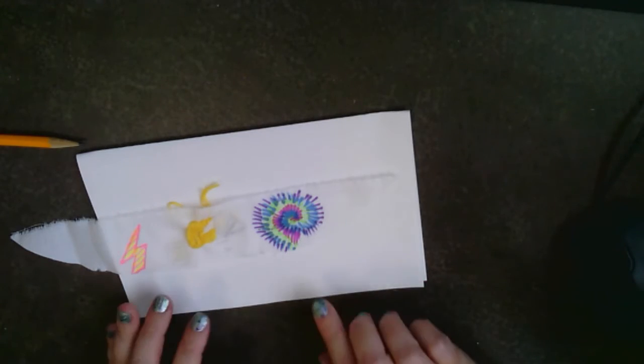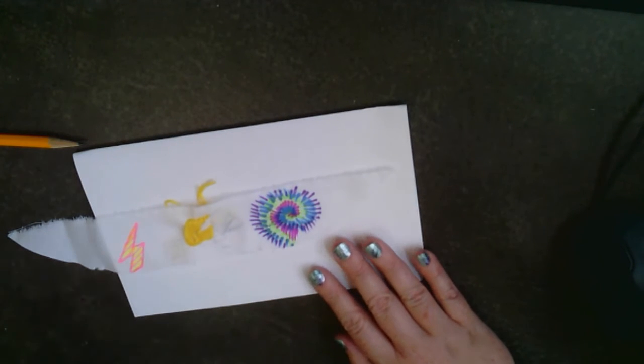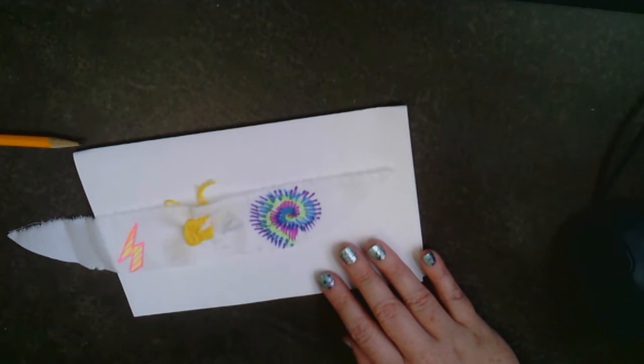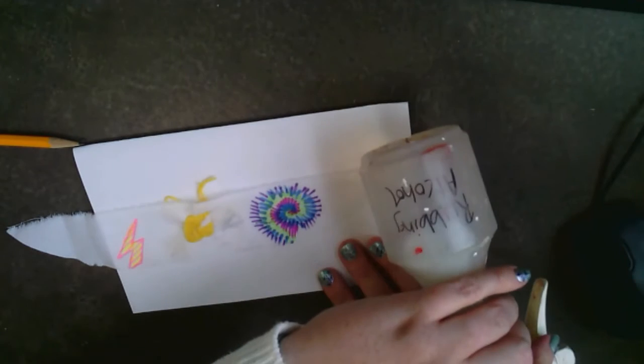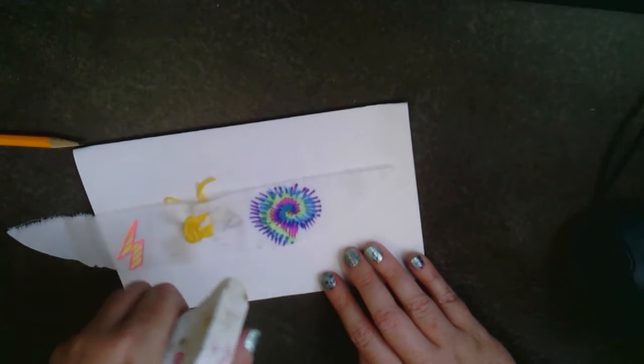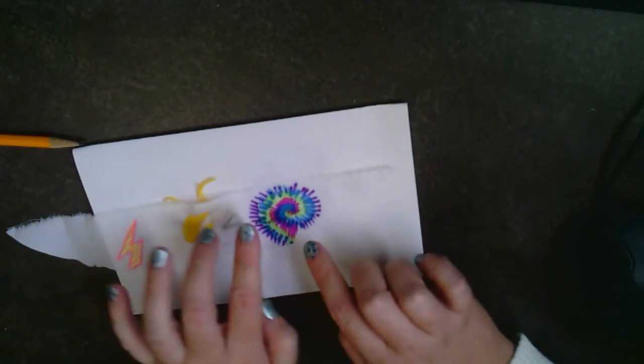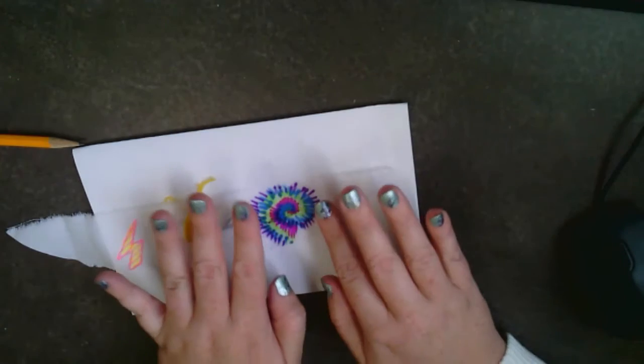All right. So now that you have your Sharpie drawn on your fabric, you have a piece of fabric underneath. Let me know, and I have a spray bottle full of rubbing alcohol. I will be the one to spray. I'm just going to spray your whole piece.